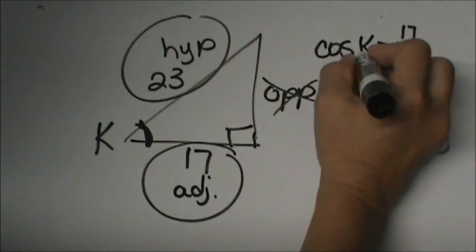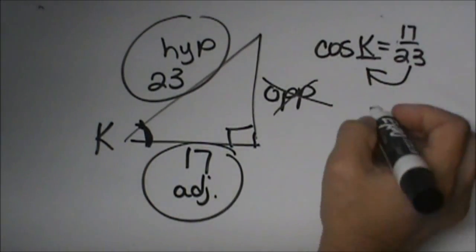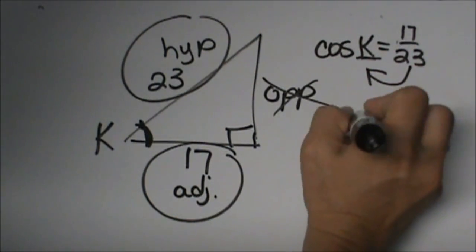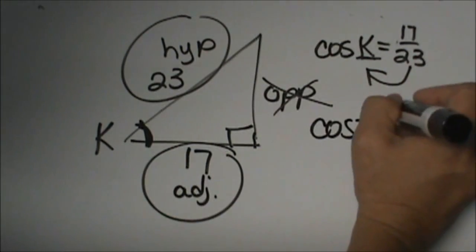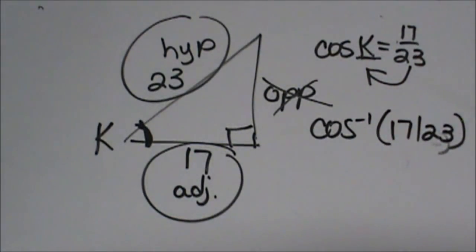We are going to use our inverse button to look for the angle measure. So I am going to take cosine to the negative one, or the inverse cosine of 17 twenty-thirds, and let's crank that out and see what our angle measure is.